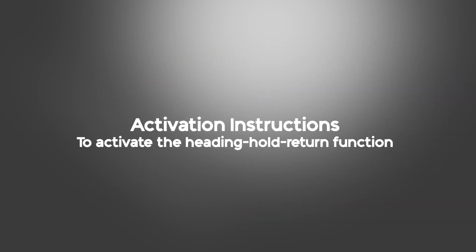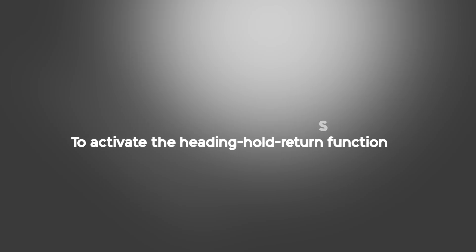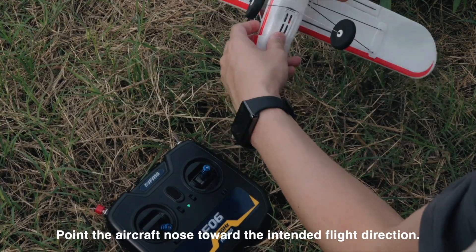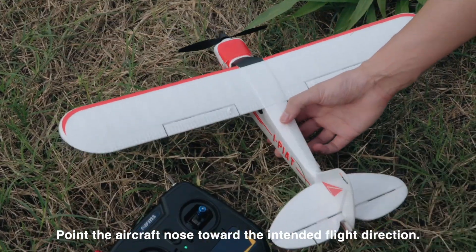To activate the Heading Hold Return function, first turn on the transmitter, then power up the airplane. Point the aircraft nose toward the intended flight direction.